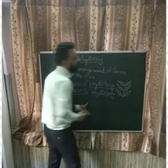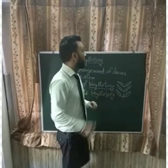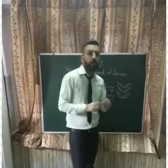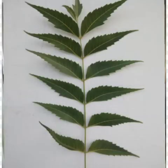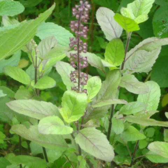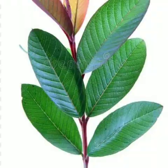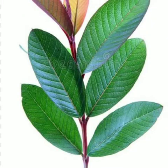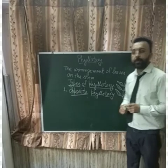This type of Phyllotaxy is found in the plants of neem, tulsi, jasmine, guava, etc. So these are a few examples of opposite Phyllotaxy.